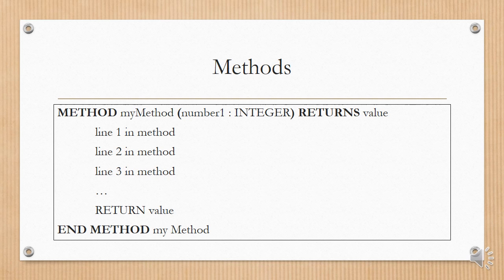To add a method to your algorithm, use the keyword METHOD, then give your method a name like myMethod. If you have parameters, put them in brackets just like in Java — for example, parameter number1 as integer. If the method returns anything, put that at the end: returns value. Note that unlike Java, you don't put the return type at the beginning; you put it at the end of the top line. Include all method lines inside, then at the bottom put RETURN value, and right at the bottom END METHOD myMethod.